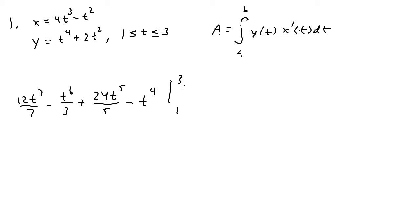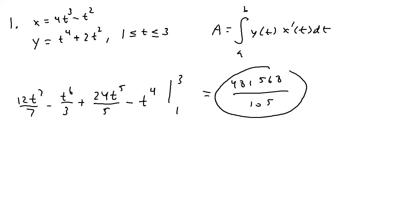I'll use my calculator to evaluate this. You should get exactly 481,568 over 105 as the area under these two parametric curves.